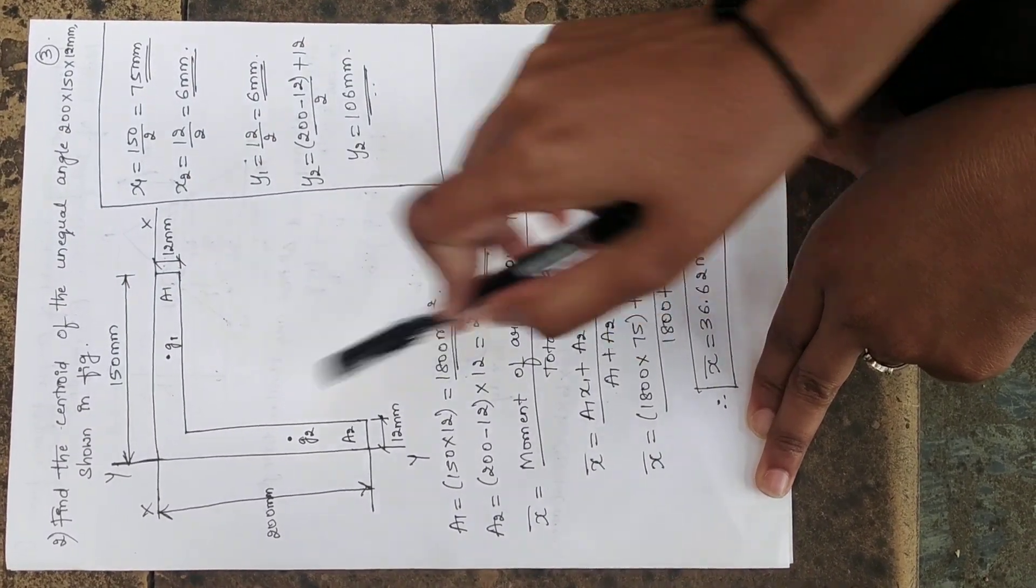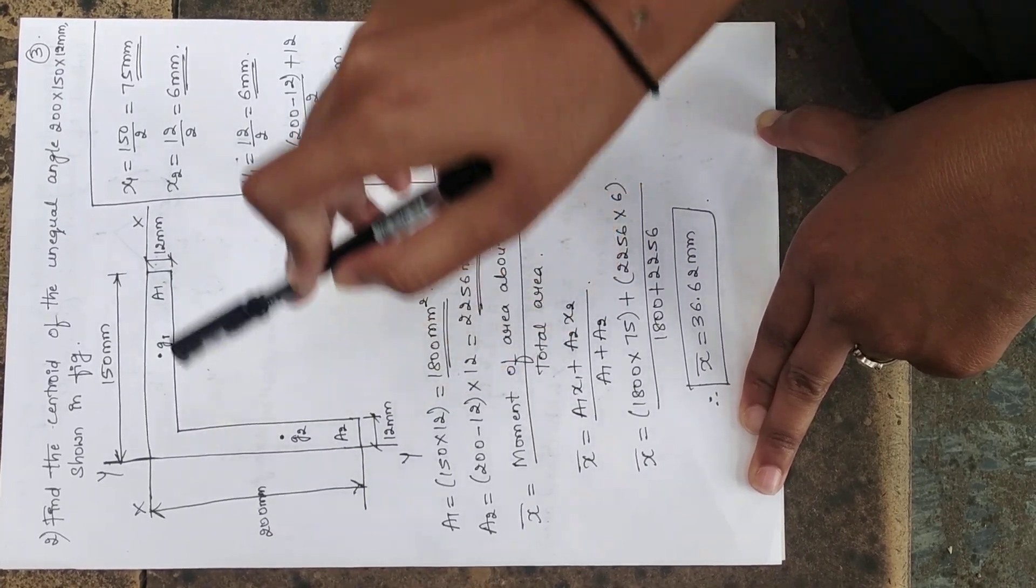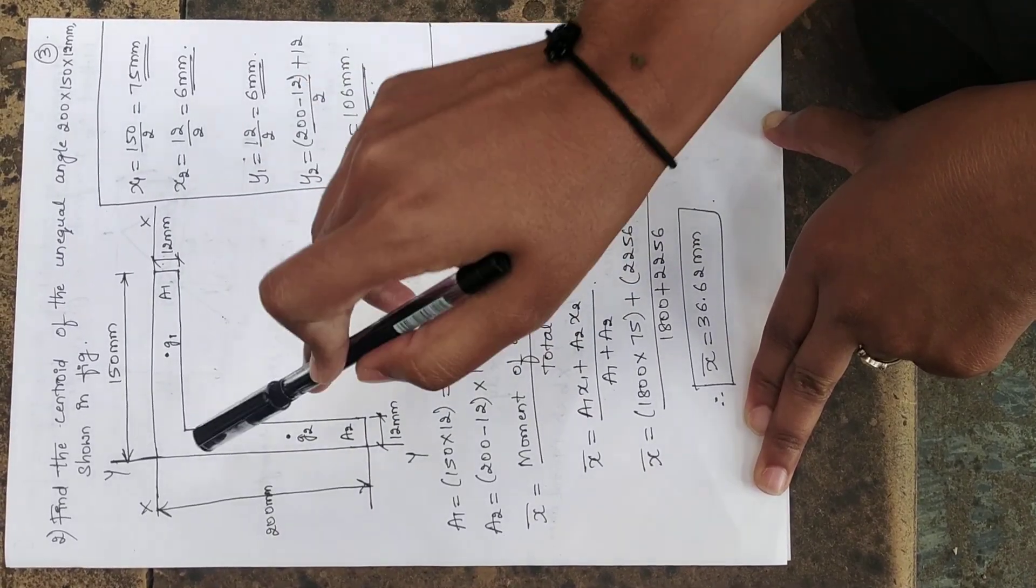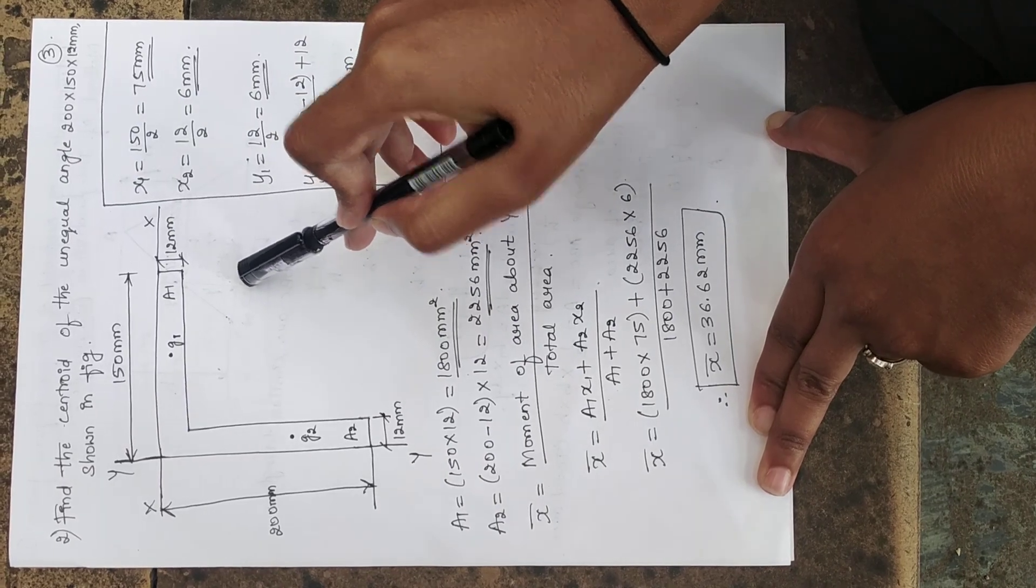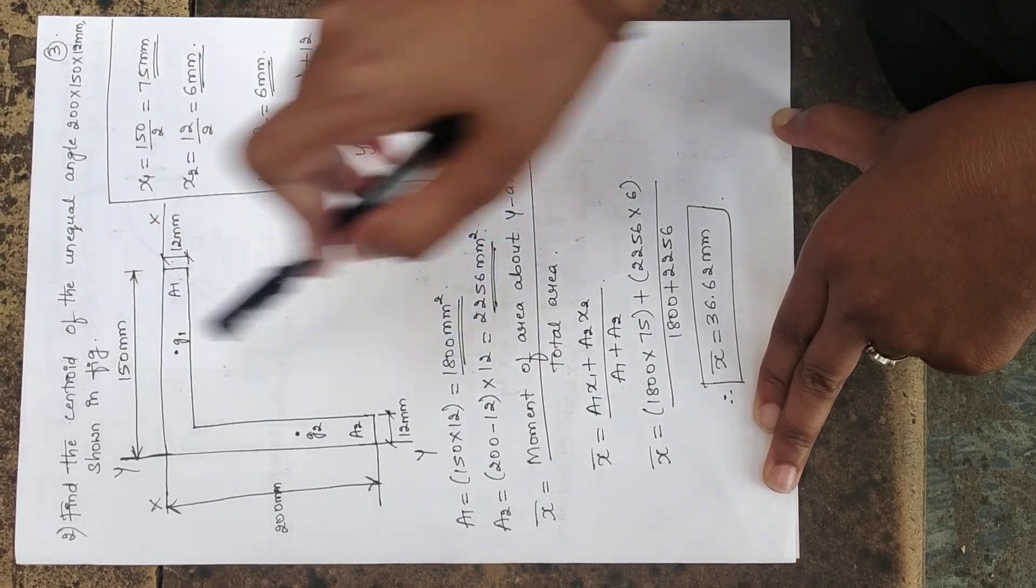For example, if I am cutting along y-axis, whatever the portion which you are seeing on the left side, the same mirror image you have to see on the right side. But I am not getting the same mirror image here. That's why we can say that the channel is unsymmetrical about y-axis.